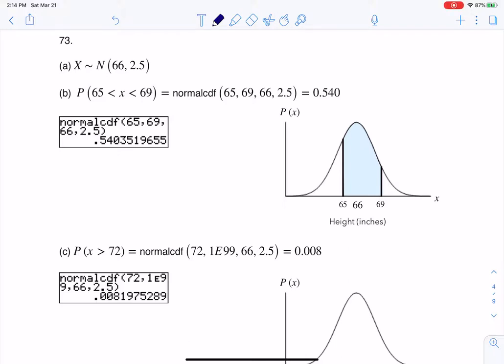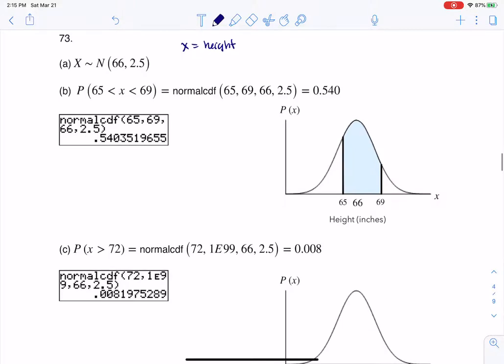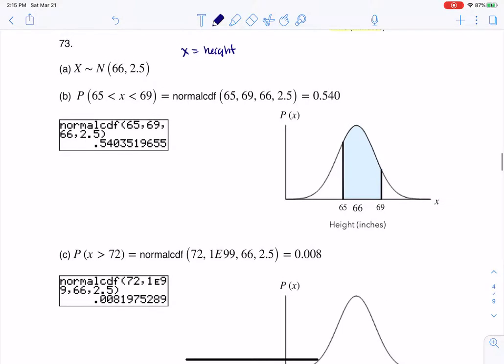Hey Math43, I had a question coming out of chapter 6, number 73, and here we were given some data for the height of Asian adult males, so that was our numerical variable. Height of Asian adult males.